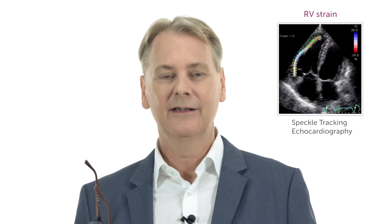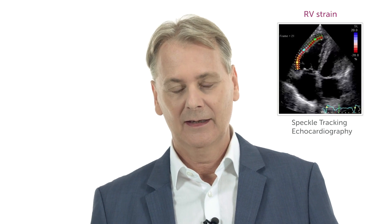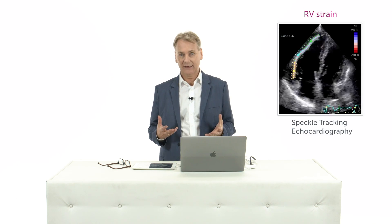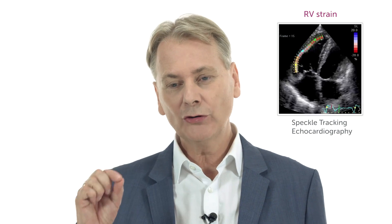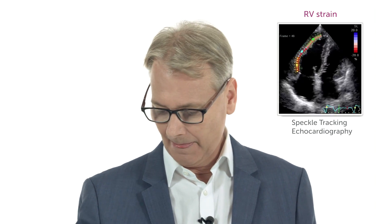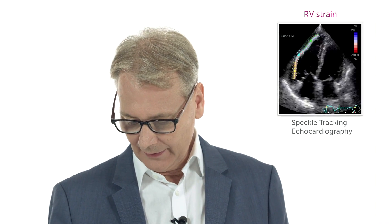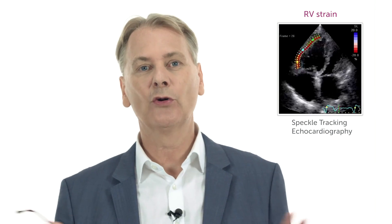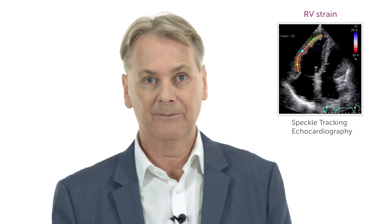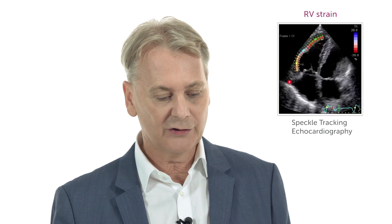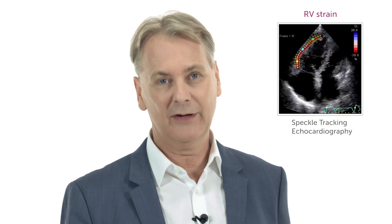The last parameter I want to show you is my favorite parameter: right ventricular strain. What is it? Basically, we're using a technology called speckle tracking, where we track the motion of these bright little echoes you see throughout the entire myocardium, and with this you're able to look at the percentage shortening of the myocardium. Especially important is the motion of the longitudinal function, which can be assessed both for the left and for the right ventricle.